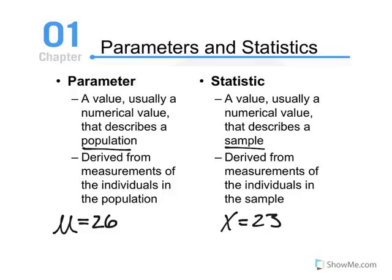Mu is understood as a parameter, and x-bar is a statistic. A way to help you distinguish the two is by remembering P for P, parameter for population, and S for S, statistic for sample.